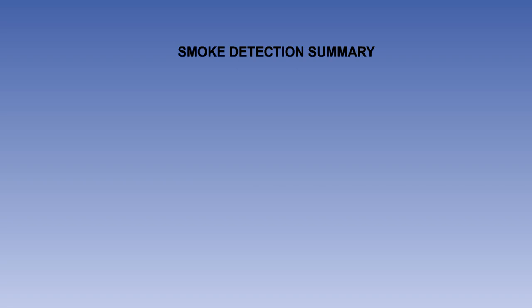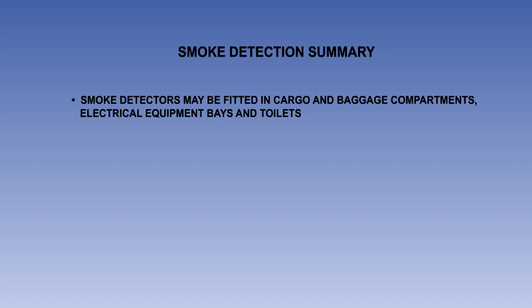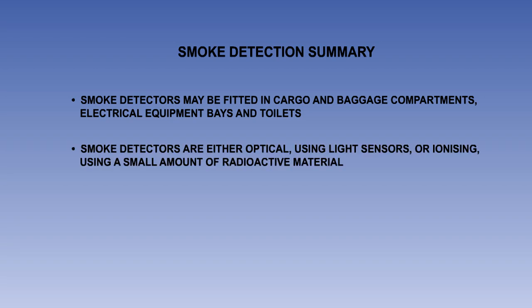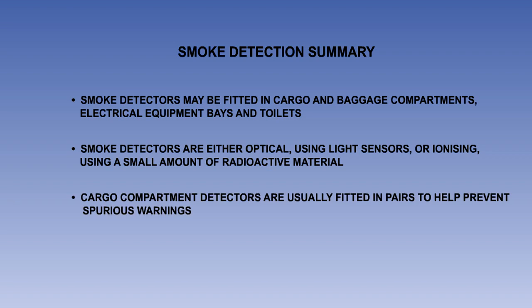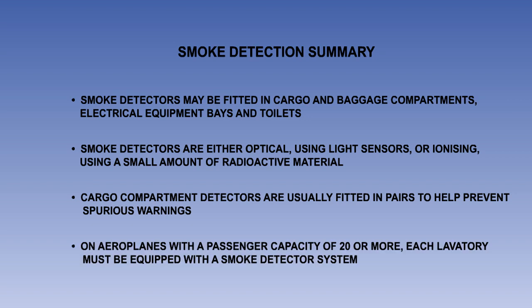That is the end of the lesson. Here is a summary of the main points. Smoke detectors may be fitted in cargo and baggage compartments, electrical equipment bays and toilets. Smoke detection sensors operate on one of two principles. They are either optical, using light sensors, or ionizing, utilizing a small amount of radioactive material. Cargo compartment smoke detectors are usually fitted in pairs to help prevent spurious warnings, both detectors needing to sense smoke before a warning is given. It is a regulatory requirement that on aeroplanes with a passenger capacity of 20 or more, each lavatory must be equipped with a smoke detector system or equivalent that provides a warning light in the cockpit or provides a warning light or audible warning in the passenger cabin that will be readily detected by a cabin crew member.